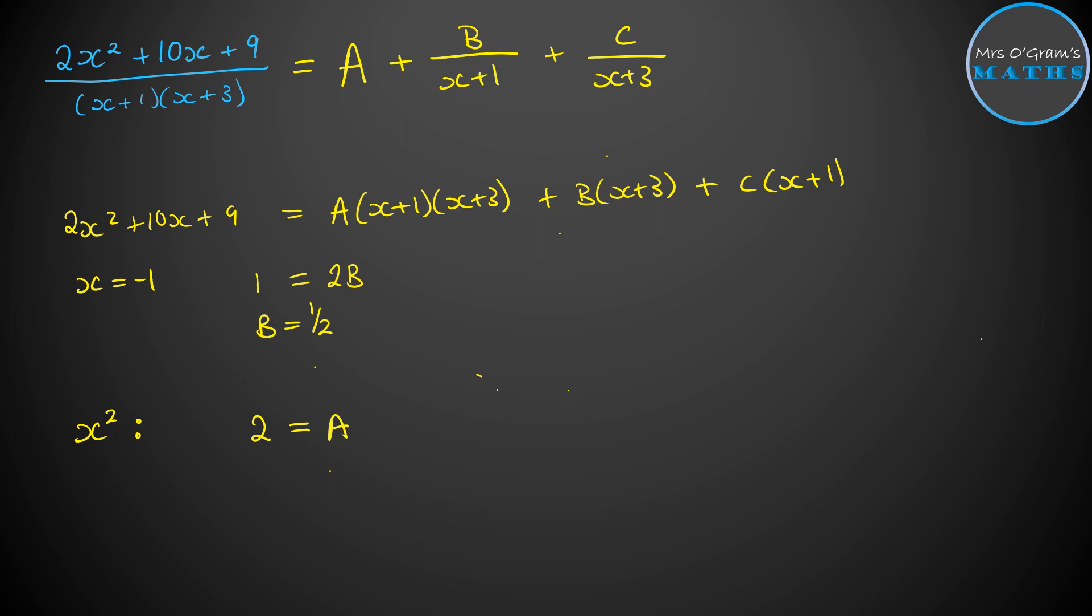Then finally, we just need to work out the C for this one. I will go with putting in X equals minus 3, which gives us a minus 3 on the left hand side. And then on the right hand side, we get with that C part of a minus 3 plus 1 is minus 2. So we get minus 2C. So C is equal to 3 over 2. And we can write our final answer like this.